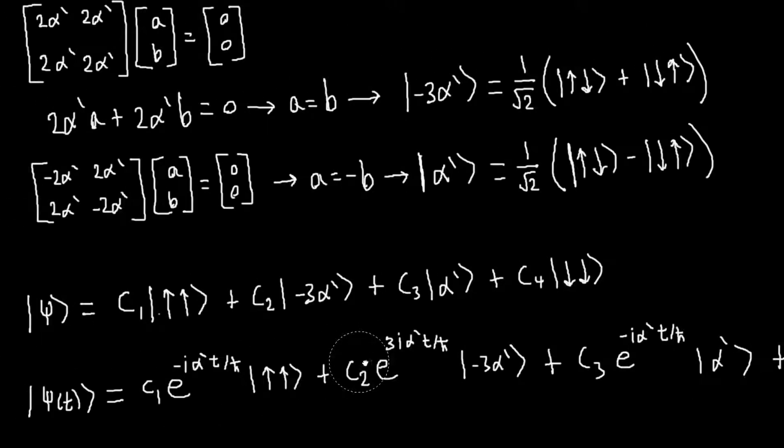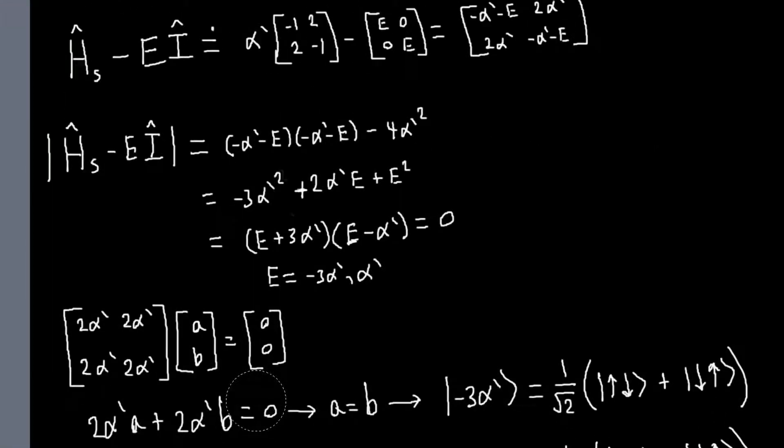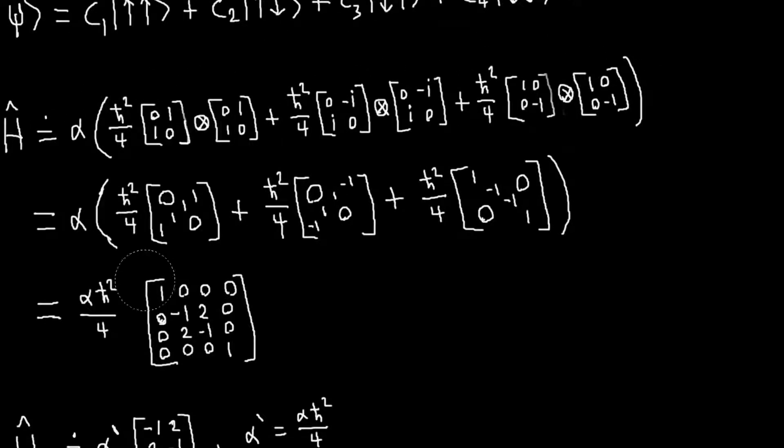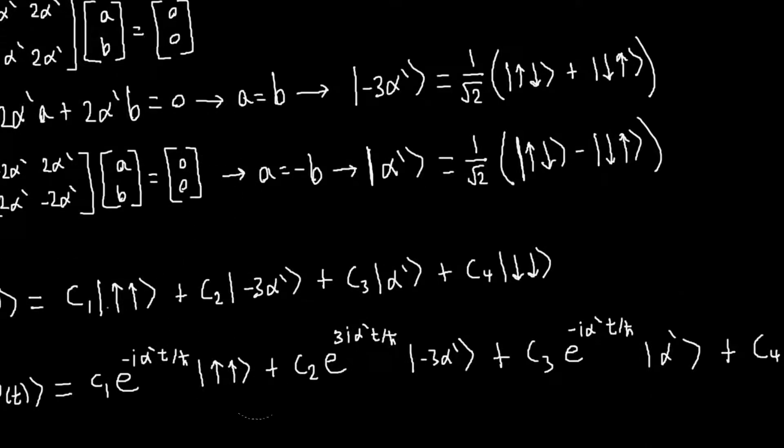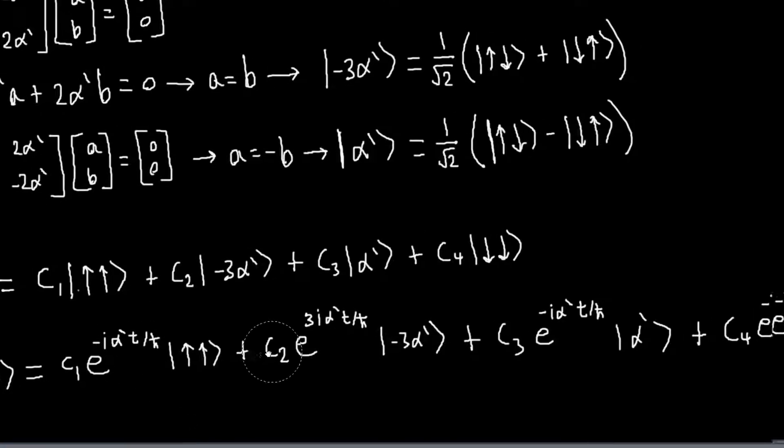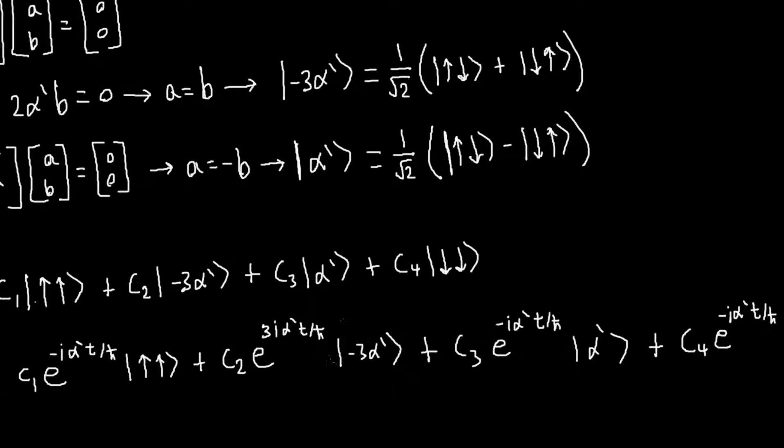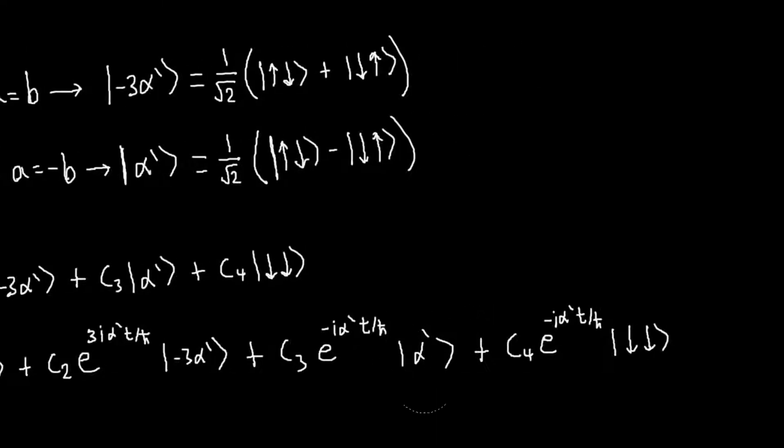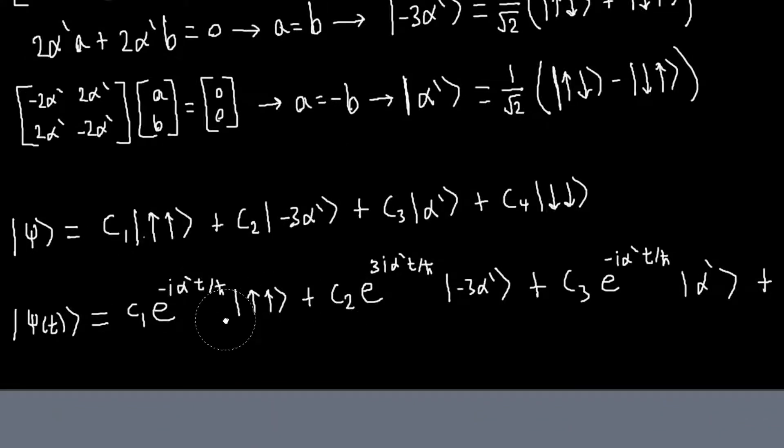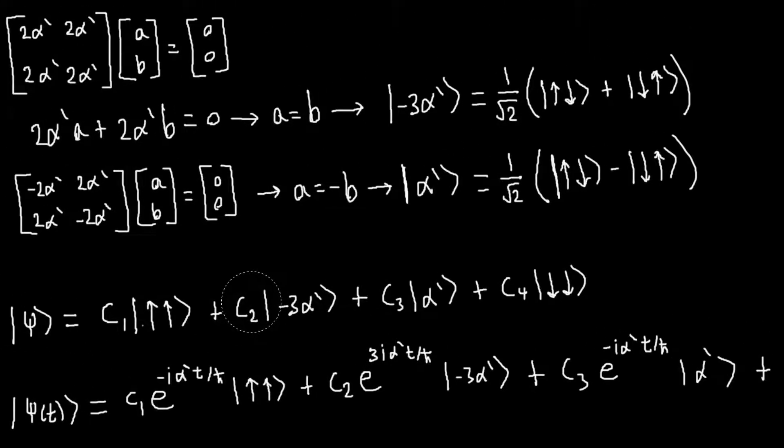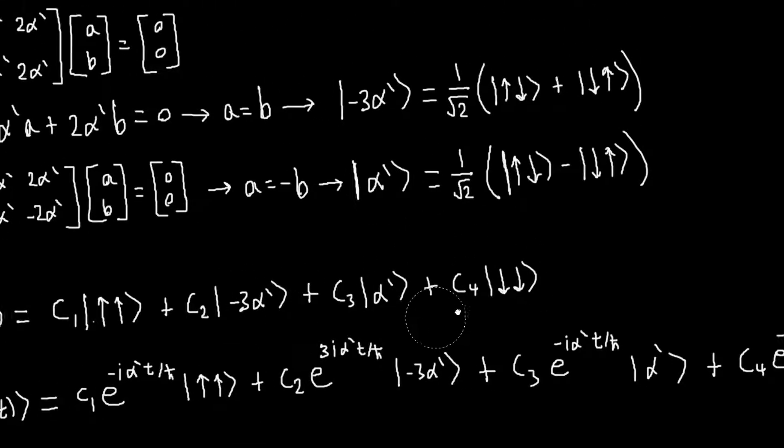So here, for the up-up and down-down states, you can verify that the eigenvalues will just be alpha h-bar squared over 4, which is alpha prime. So here I replaced the H with alpha prime, here I replaced it with minus 3 alpha prime, and then these two also with alpha prime. So again, our problem is very easy to solve once we've expanded our state in terms of the eigenstates.